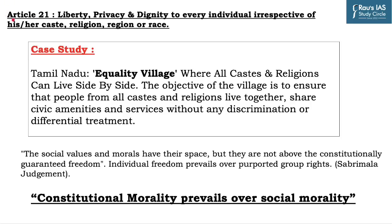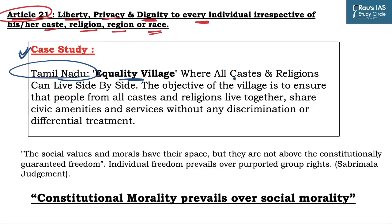To conclude your answer, you can mention Article 21 which provides liberty, privacy and dignity to every individual irrespective of caste, religion, region or race. You can also mention a case study of Tamil Nadu's village named 'Equality Village' where all castes and religions can live side by side, sharing civic amenities and services without any discrimination. As the Sabarimala judgment says, social values and morals have their space but they are not above the constitutionally guaranteed freedom. Constitutional morality prevails over social morality.